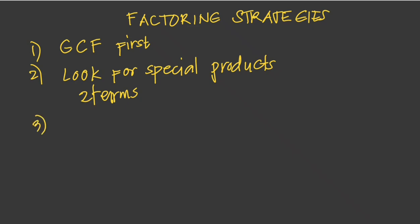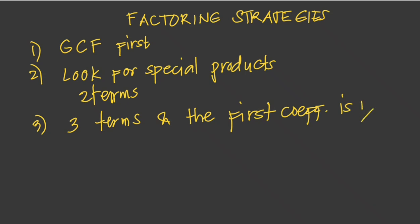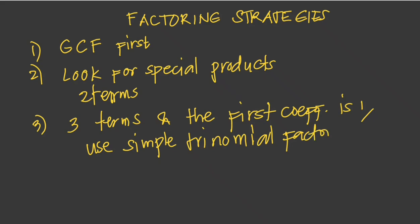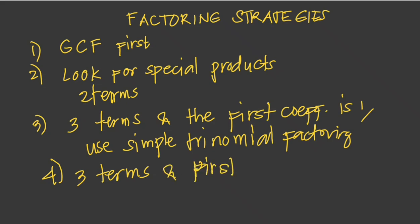If there are three terms and the first coefficient is one, then use simple trinomial factoring. If there are three terms and the first coefficient is not equal to one, then you use the AC method.